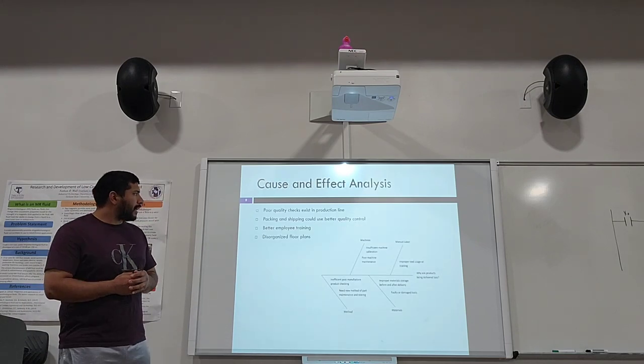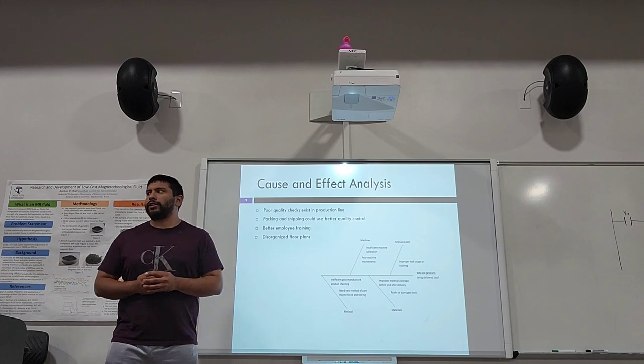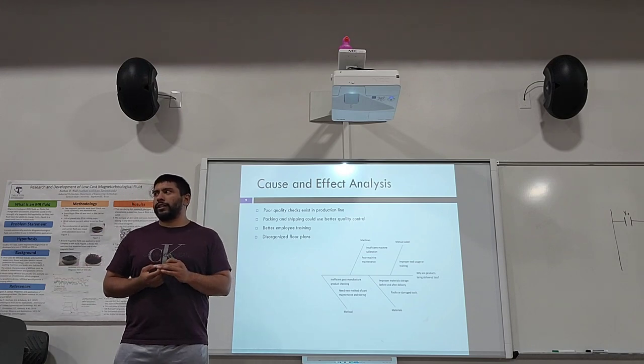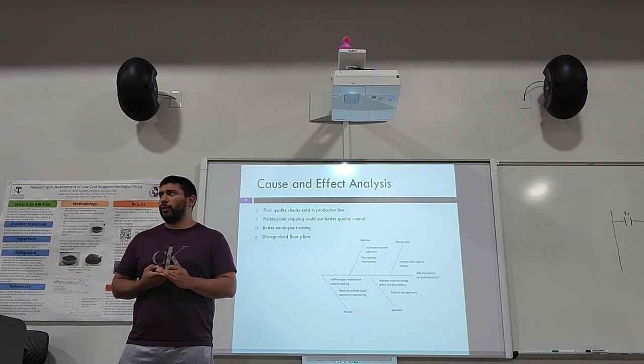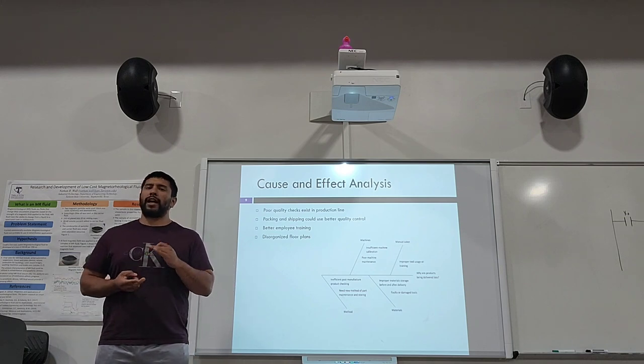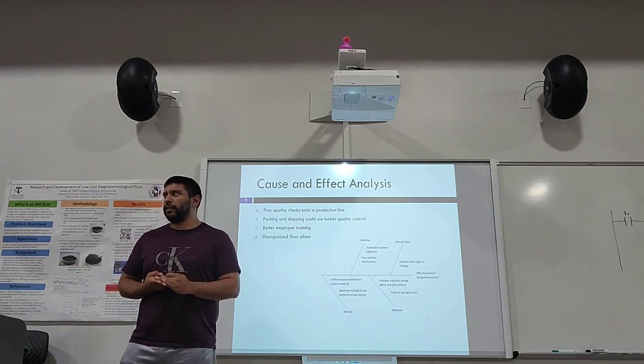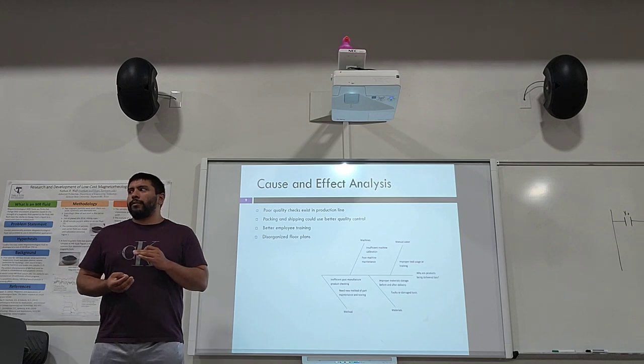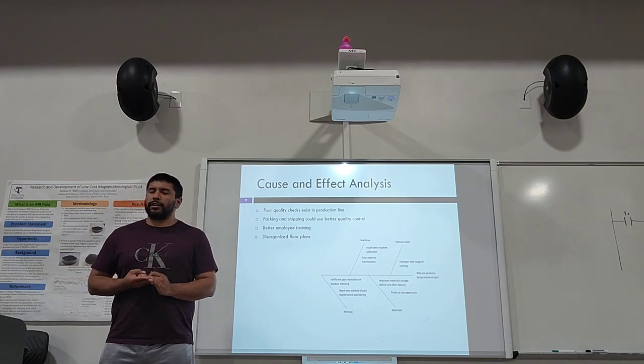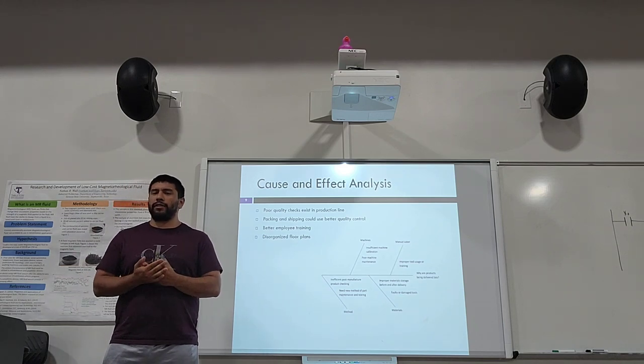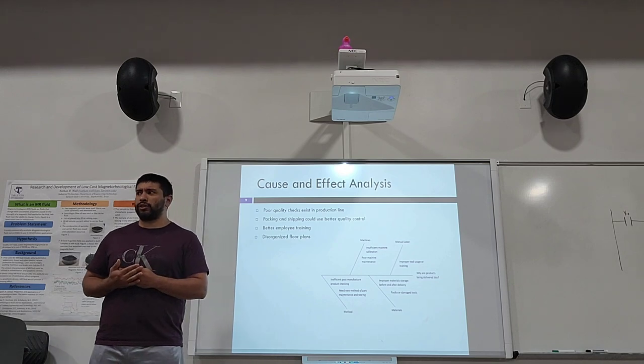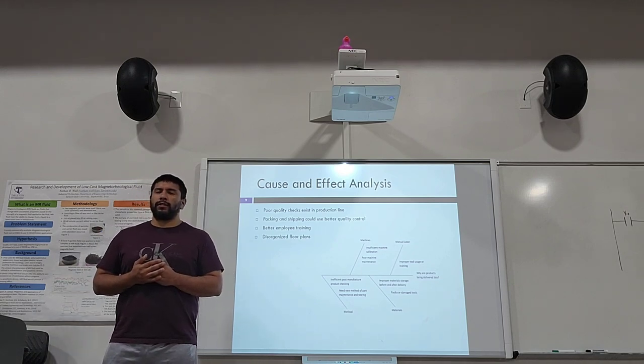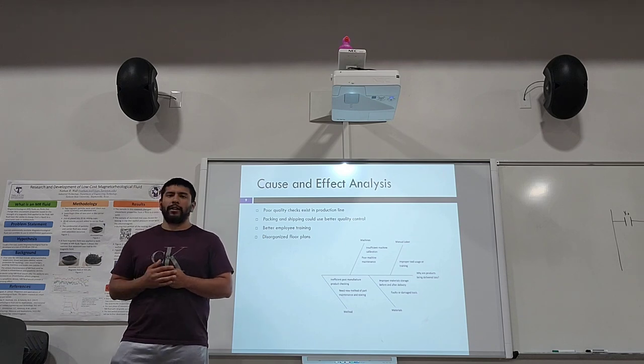Once we break it down and look at the cause and effect analysis, we see that poor quality checks exist in this production line, both at the production line and the packing and shipping level. Better employee training could be used, and the floor plans could be disorganized and could be made better for the material flow.